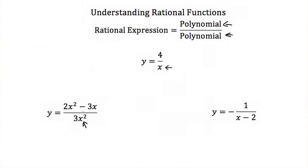Now you can have more than just monomials in your denominator. Here I have y is equal to negative 1 over x minus 2. This is a binomial, but again there's a variable in it and it's in the denominator. So this is a rational function.